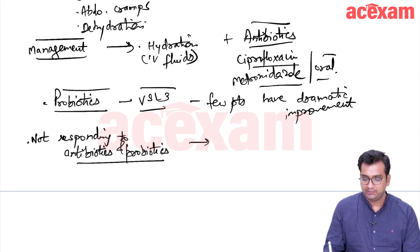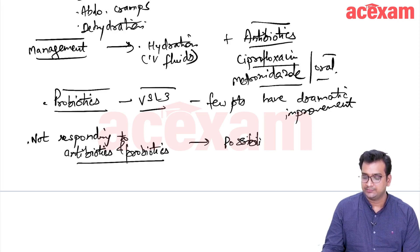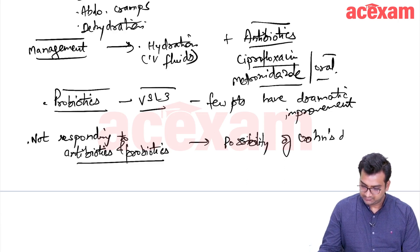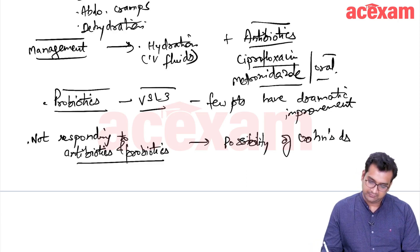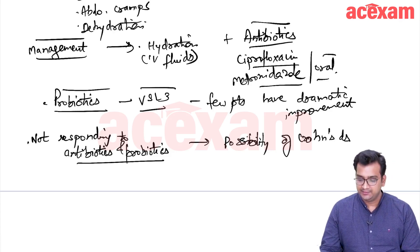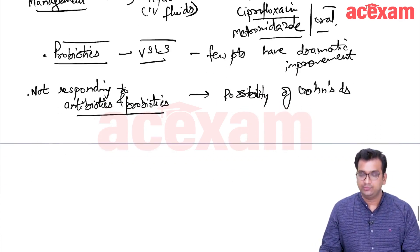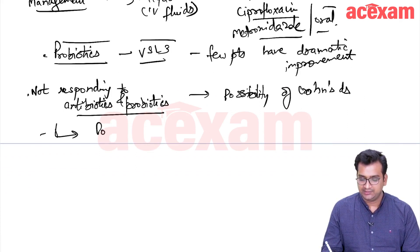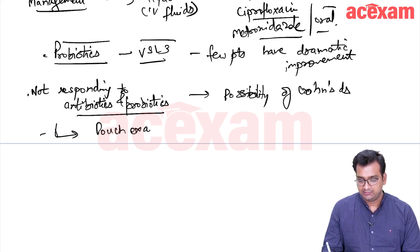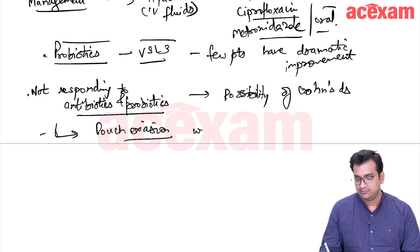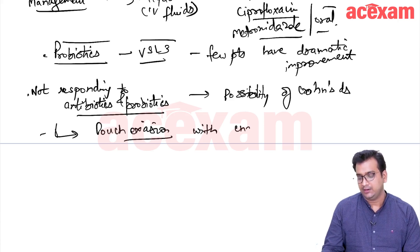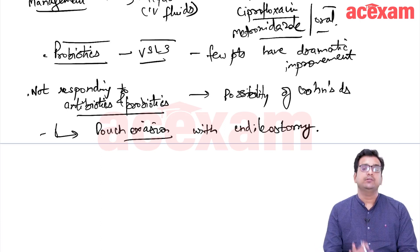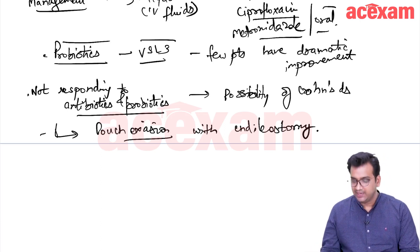But if the patient is not responding to antibiotics and probiotics, there is a possibility of Crohn's disease. If there is Crohn's disease or if it is not responsive, then we should do a pouch excision with end ileostomy.